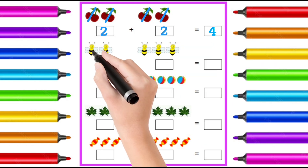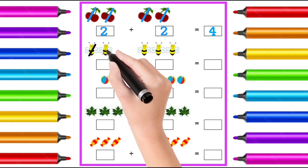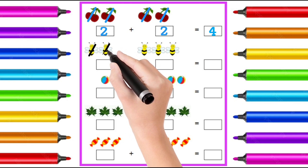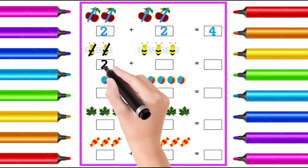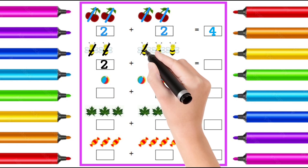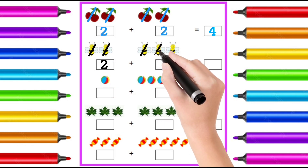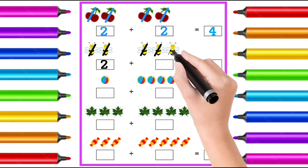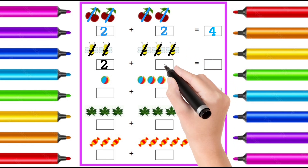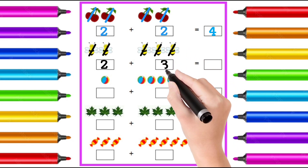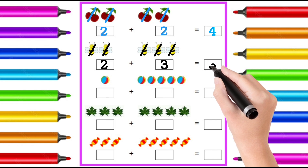1, 2 — it is 2. 1, 2, 3 — it is 3. 2 plus 3 is equal to 5.